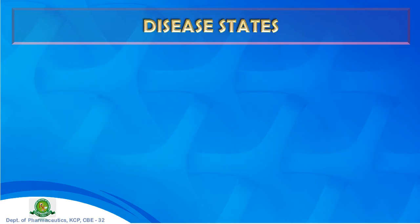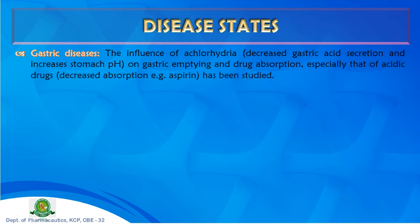Disease states are the next patient-related factor. Several disease states influence the rate and extent of drug absorption. Major classes include gastrointestinal, cardiovascular, and hepatic diseases. For gastric diseases, achlorhydria (decreased gastric acid secretion) increases stomach pH, impacting gastric emptying and drug absorption — studies show decreased absorption of acidic drugs like aspirin in this condition.